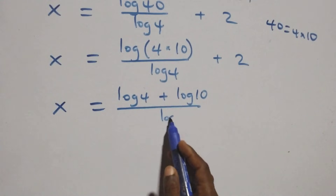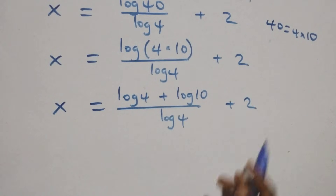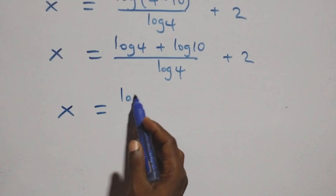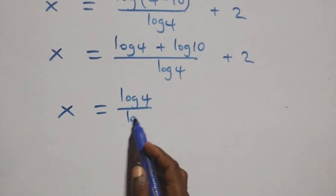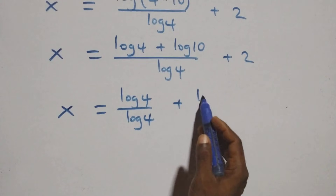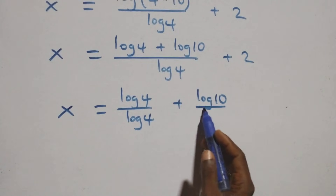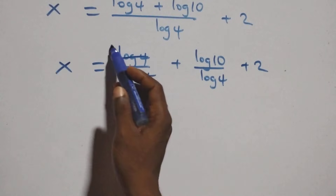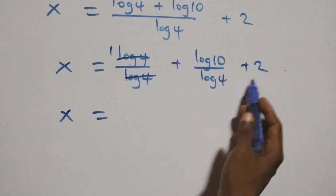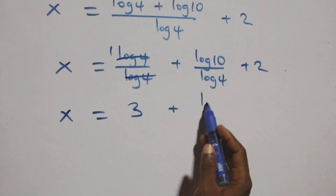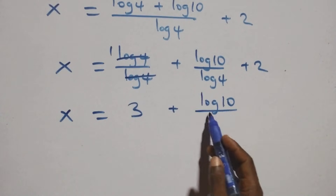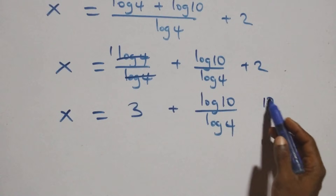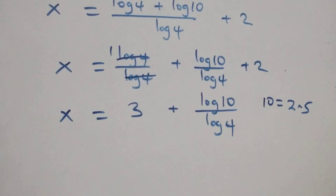Splitting the fraction, we get log 4 over log 4 plus log 10 over log 4 plus 2. The log 4 over log 4 simplifies to 1, and we also note that 10 can be written as 2 times 5. So x equals log(4 times 10) over log 4 expanded further.